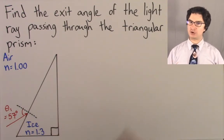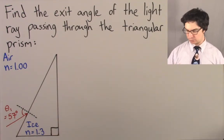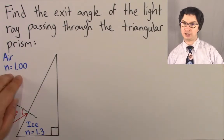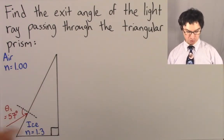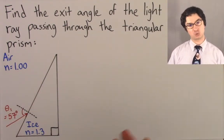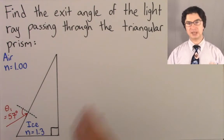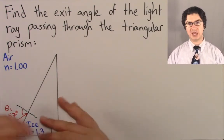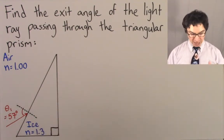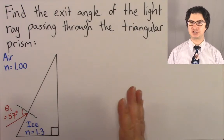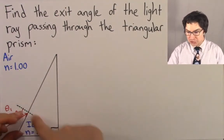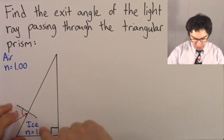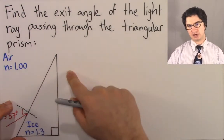Let's try to trace, step by step, what this light ray is going to do. If it's going from a low index of refraction into a high index of refraction, we know that it bends toward the normal. I want to implore you to draw this diagram nice and big on your paper. I can't emphasize this enough because there's going to be so much going on.